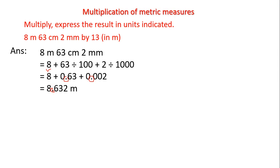Now we add the whole number part: 8 plus 0 plus 0 equals 8. So the final answer after adding is 8.632 meters. This is how we add decimal numbers place-wise, starting from the lowest place to the highest. This is the converted measurement in meters.